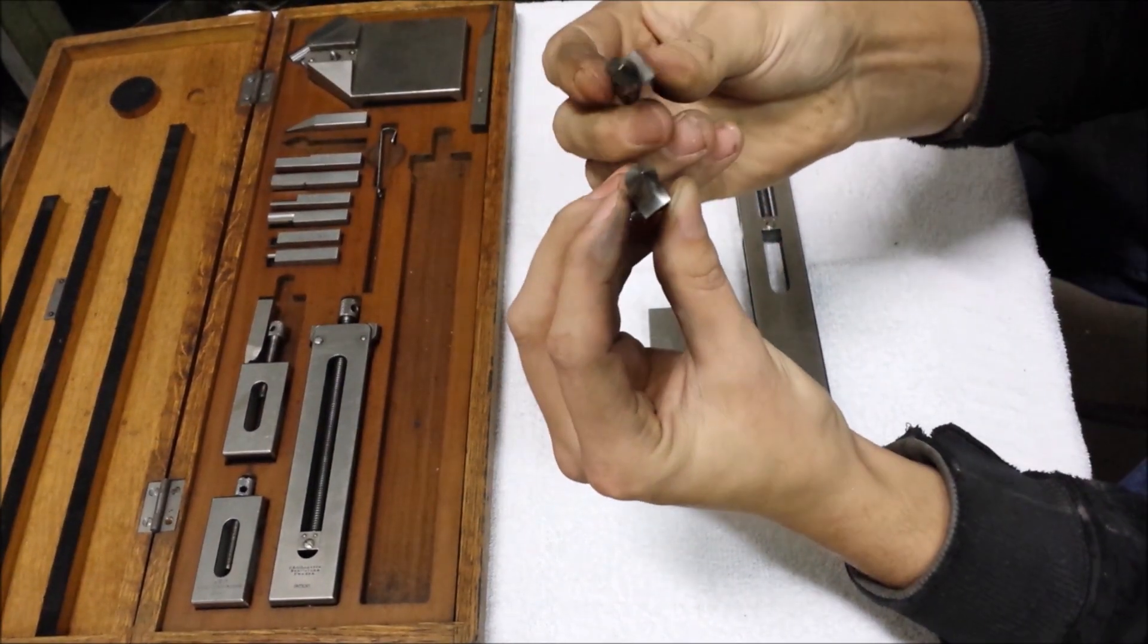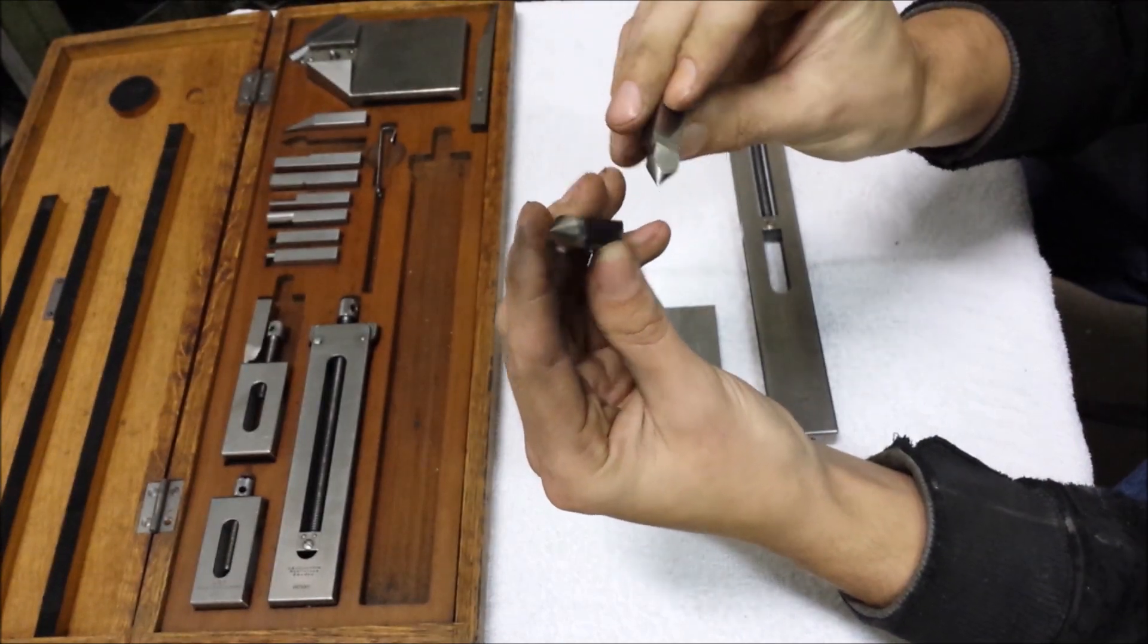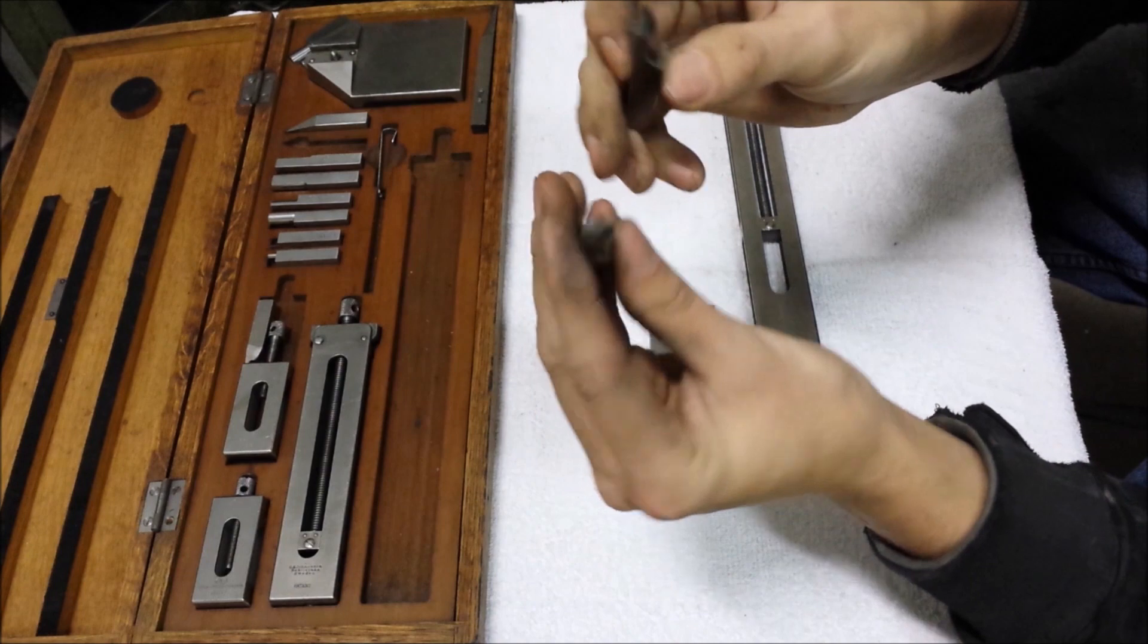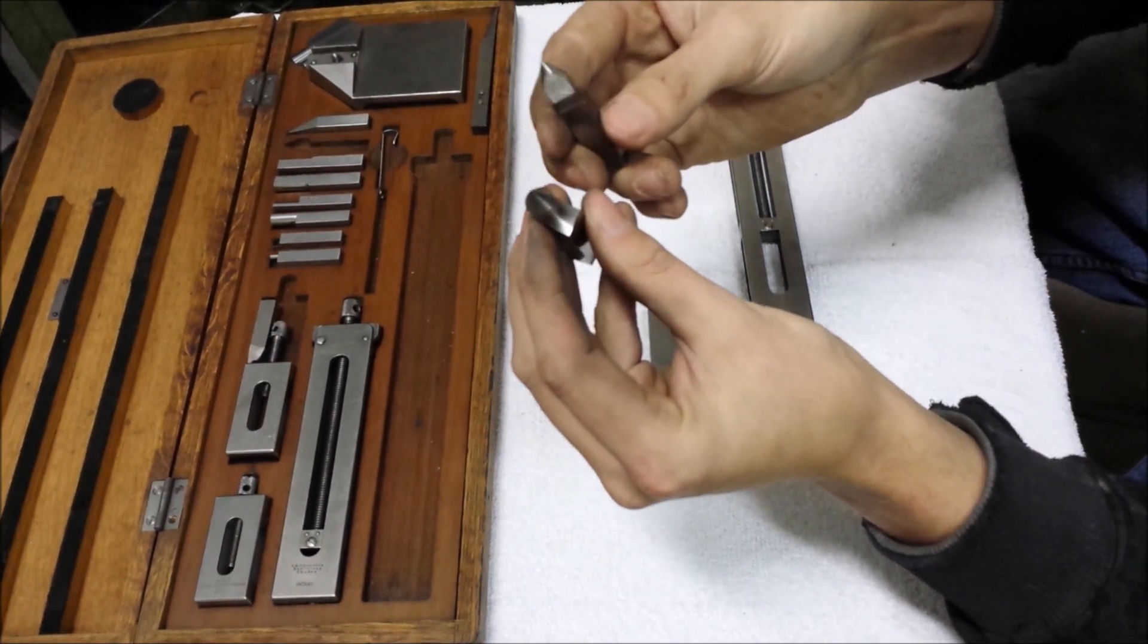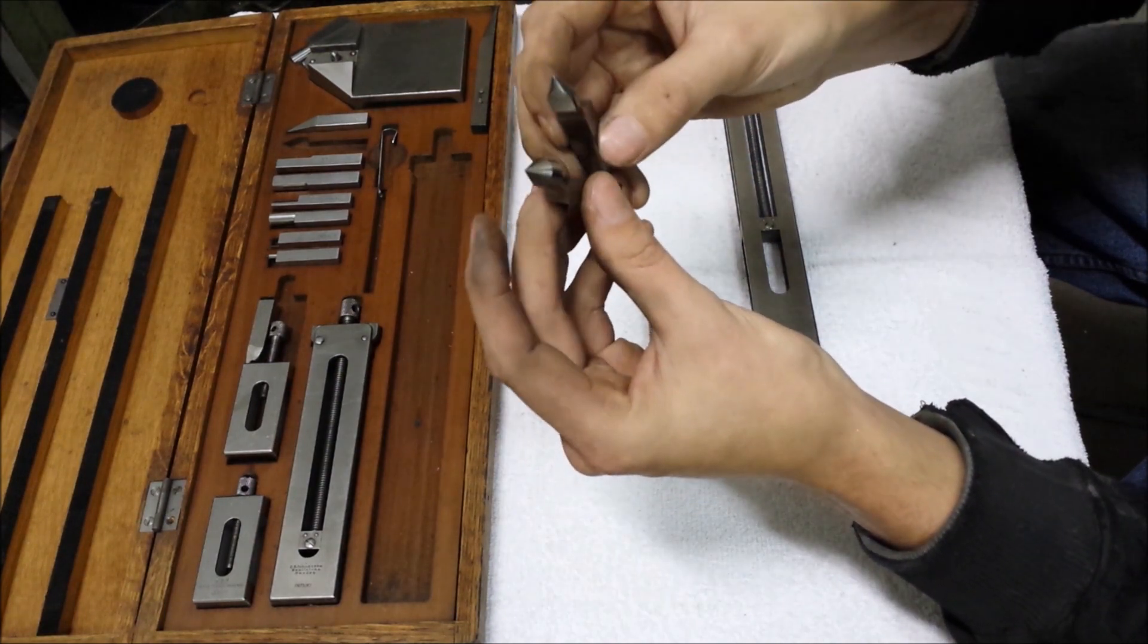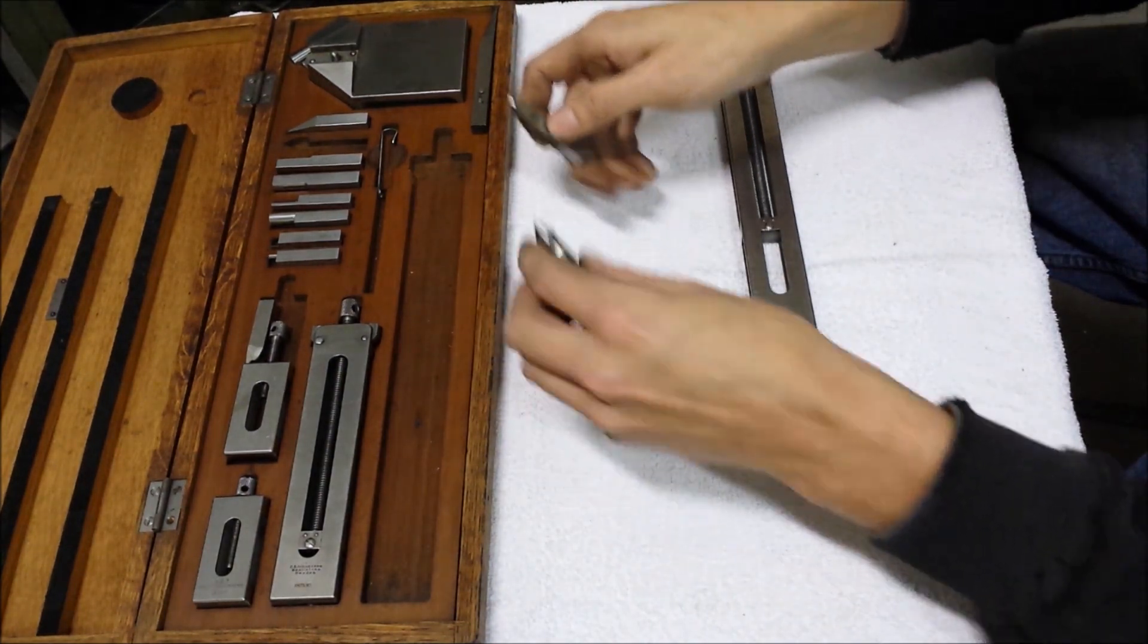And then you have this, and these are for example checking... this has a flat ground on it, and maybe checking a center hole height, or something, you could use it for that.